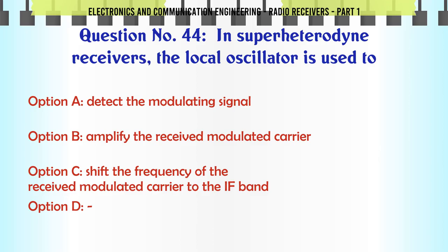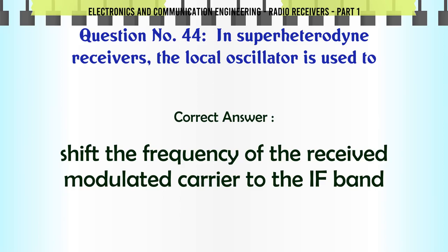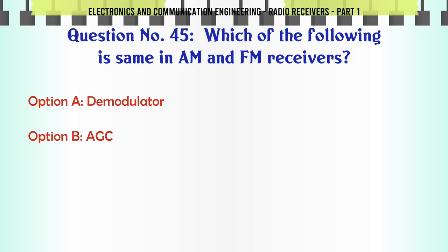In superheterodyne receivers, the local oscillator is used to: A. Detect the modulating signal. B. Amplify the received modulated carrier. C. Shift the frequency of the received modulated carrier to the IF band. The correct answer is shift the frequency of the received modulated carrier to the IF band.